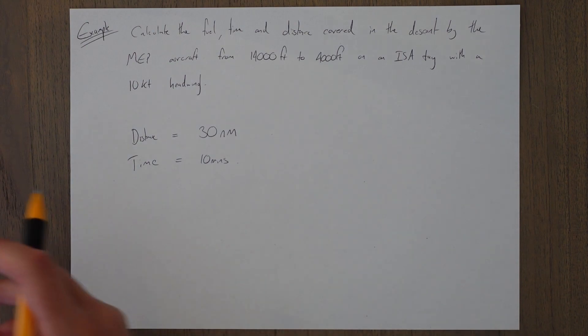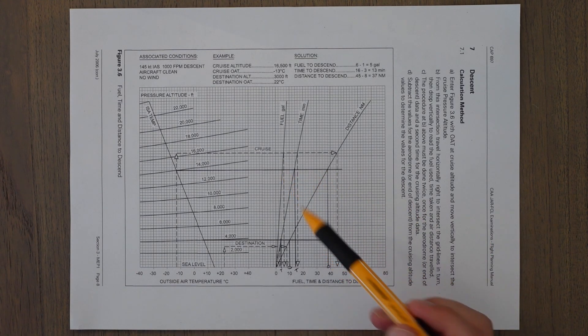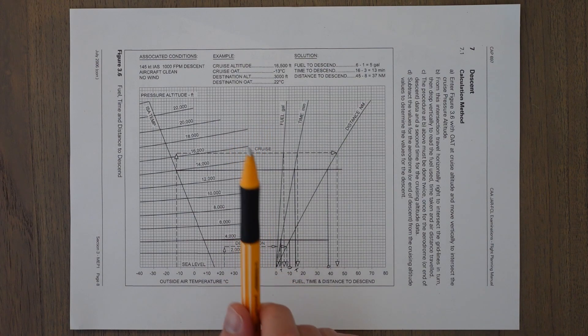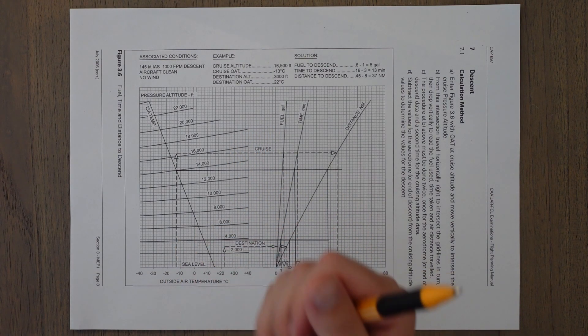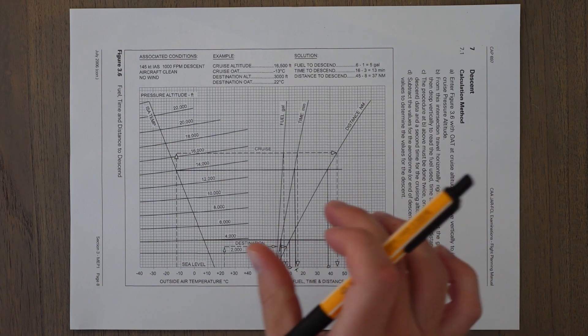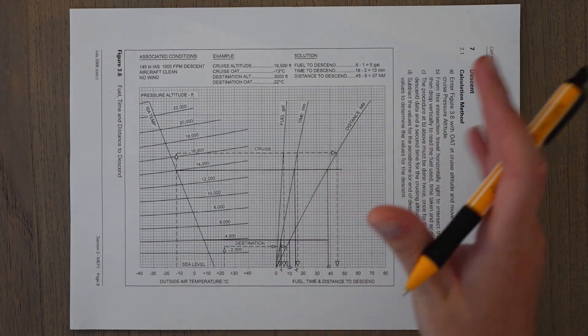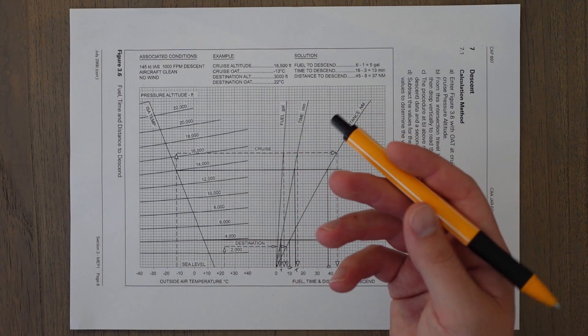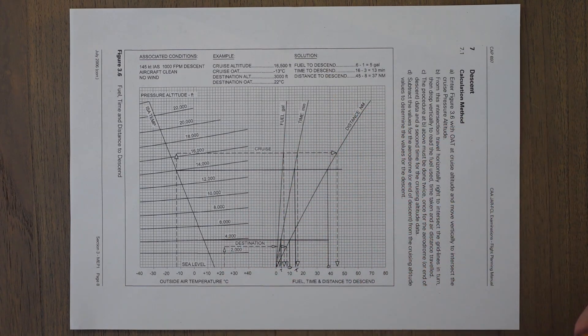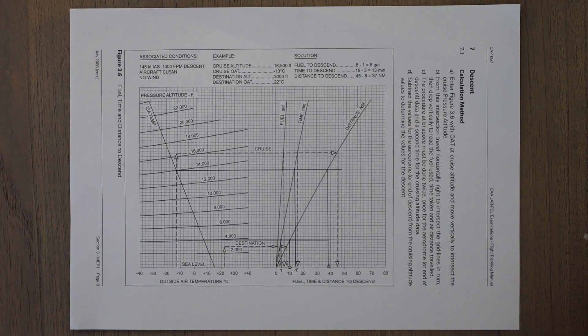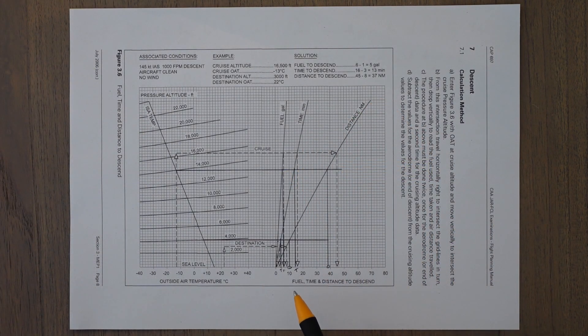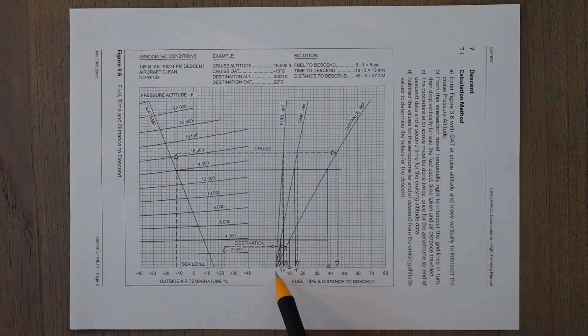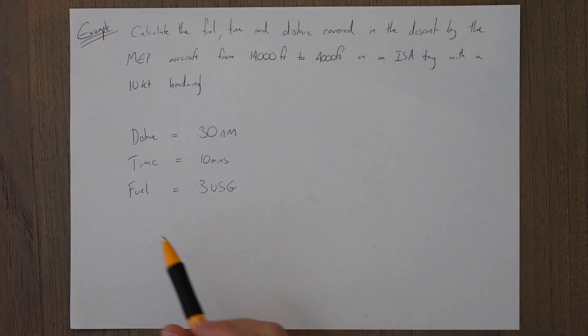Next we'll find out time. For time we've got a line here and a line here—we'll just take the difference between the two. So for time we can see the values of 14 and 4, so that means our time is going to be 10 minutes. Next one we've got to do is the fuel burn. We've got the first fuel burn—you can see the fuel line is very steep. That's because in the descent you're normally going idle power, so you're not going to burn that much fuel compared to the climb. Let's say our first value is about 5 and our next value is maybe 2—we'll call it 3 US gallons burnt.